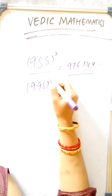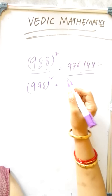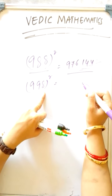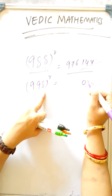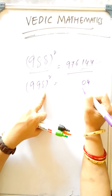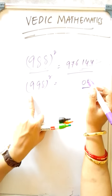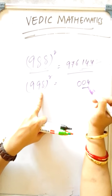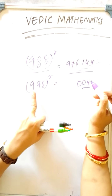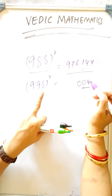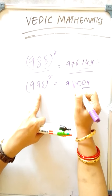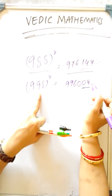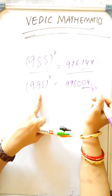998 square. 998 is how much lesser from 1000? 2 is lesser. 2 square is 004 — we have to place three digits since this is base 1000. We have to subtract minus 2 from 998. 998 minus 2 is 996. The answer is 996004.